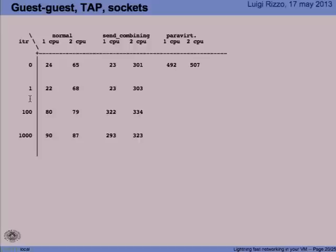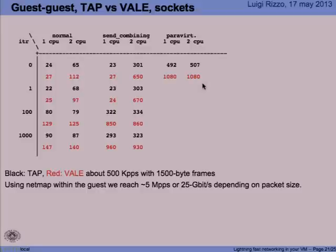The problem is that increasing the interrupt moderation improves performance, but it has an impact on latency and might not be what you want if you need low latency or high throughput with small window sizes. Here, in red, is the situation if you use the Vale switch as a backend with all the improvements included. We almost doubled the peak performance — a million packets per second in the case of para-virtualization, and even without para-virtualization we are getting pretty close, between 800,000 and 900,000 packets per second.